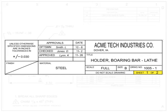Sheet numbering is critical when working on complex parts, as they may require several sheets of drawings. The first number indicates which sheet is being viewed, and the second number indicates how many sheets there are total for the drawing.